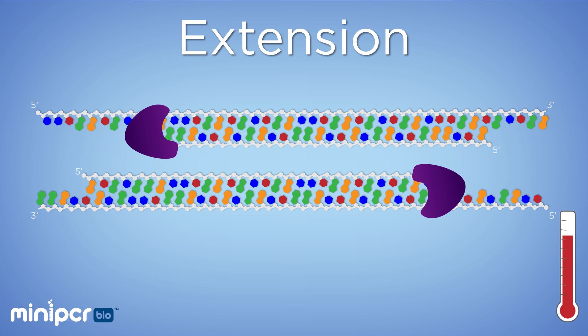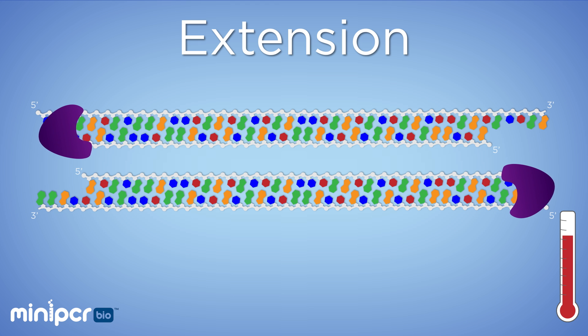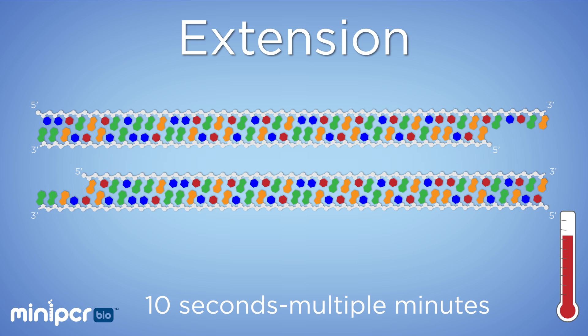If it finds an A, it adds a T, and so on, creating a complementary strand of DNA. Our extension step can vary in time. When our target is long, we can extend this step to a few minutes long to give the polymerase time to copy the entire region.